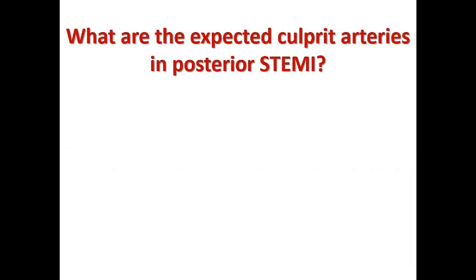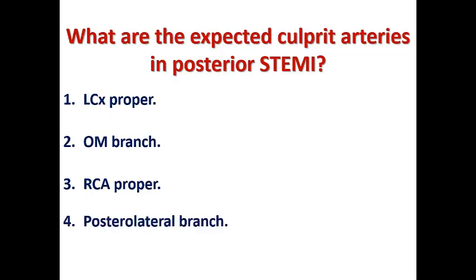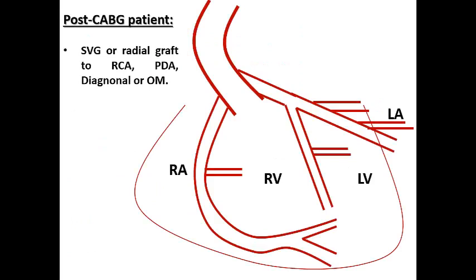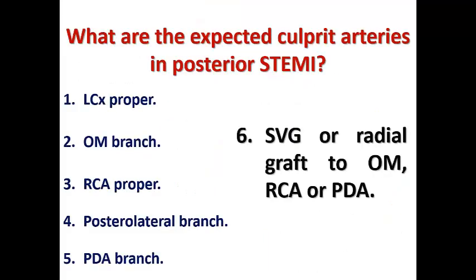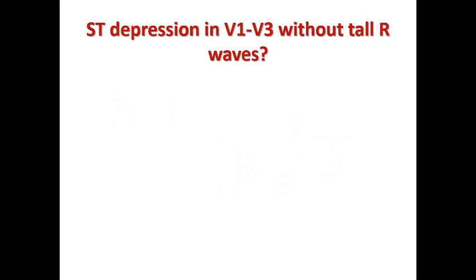To summarize the expected culprit arteries in posterior STEMI: it can be LCX proper or an OM branch, RCA proper, the posterolateral branch, or the PDA branch. In post-CABG patients, a saphenous vein graft or radial graft to the RCA, PDA, diagonal, or OM may be occluded by thrombus, resulting in posterior wall infarction. So the sixth possibility is a saphenous vein graft or radial graft to one of the vessels supplying the posterior wall of the LV.